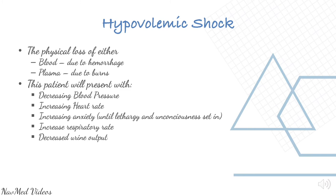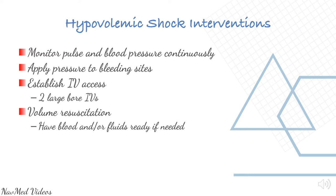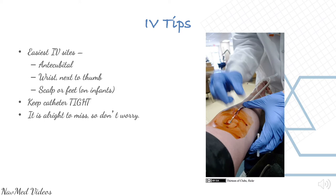Hypovolemic shock interventions: monitor pulse and blood pressure continuously, apply pressure to the bleeding sites, establish IV access with two large bore IVs, volume resuscitation, have blood and fluids ready if needed, and insert a Foley catheter to monitor output. Tips include using the antecubital fossa for IV access.